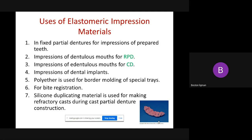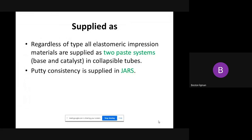Number six is for Bite Registration between two arches — between upper and lower. Number seven, sometimes you can use it for duplicating, for the construction of the tertiary cast during Chrome Cobalt construction. All types of the material are supplied and available in the market in special forms.